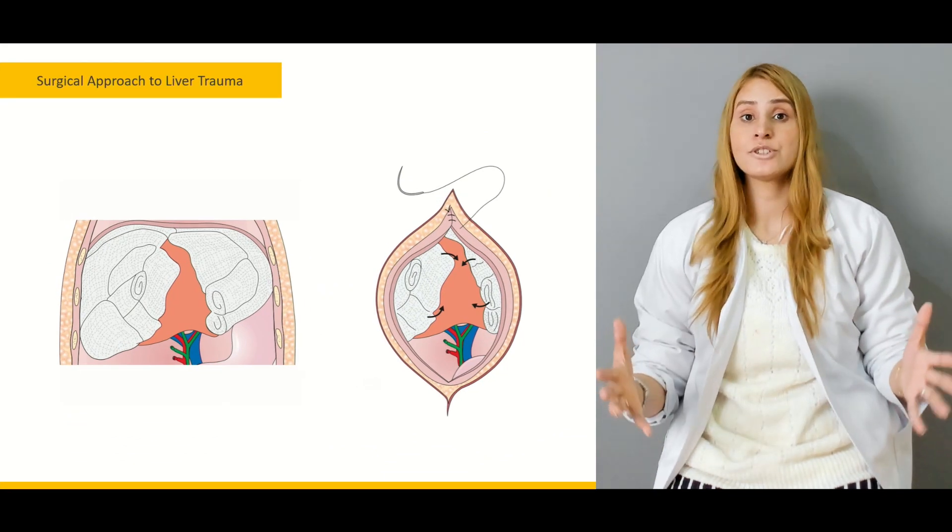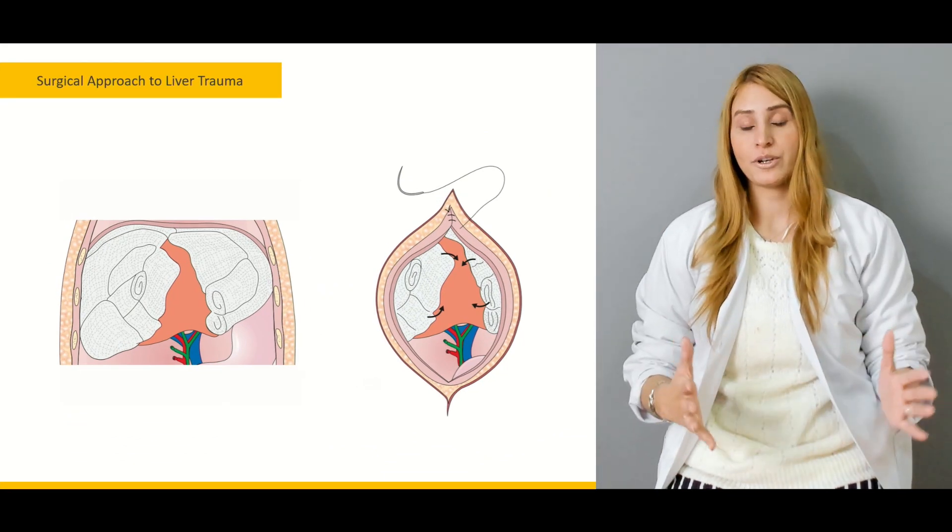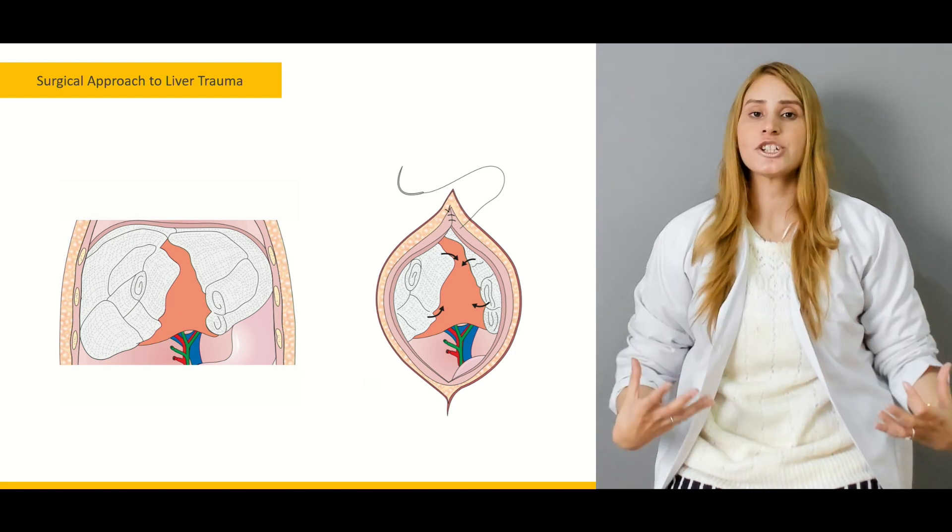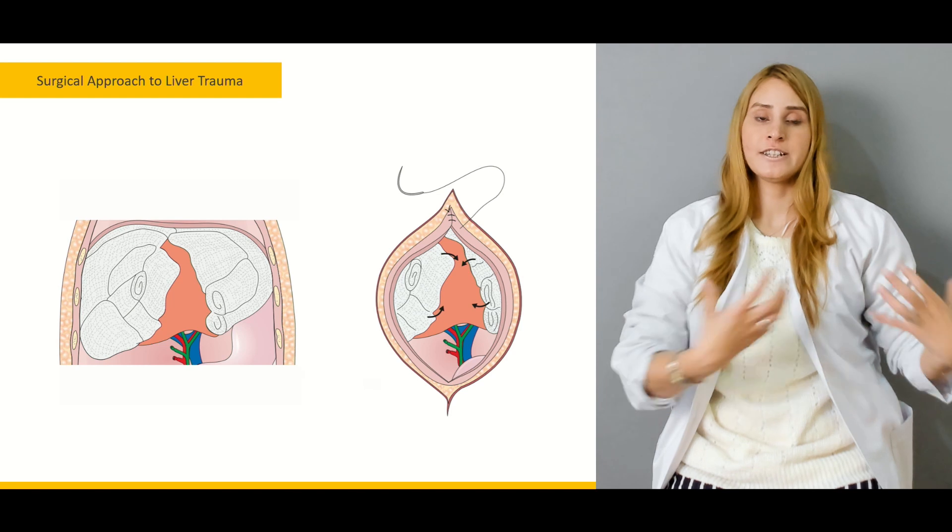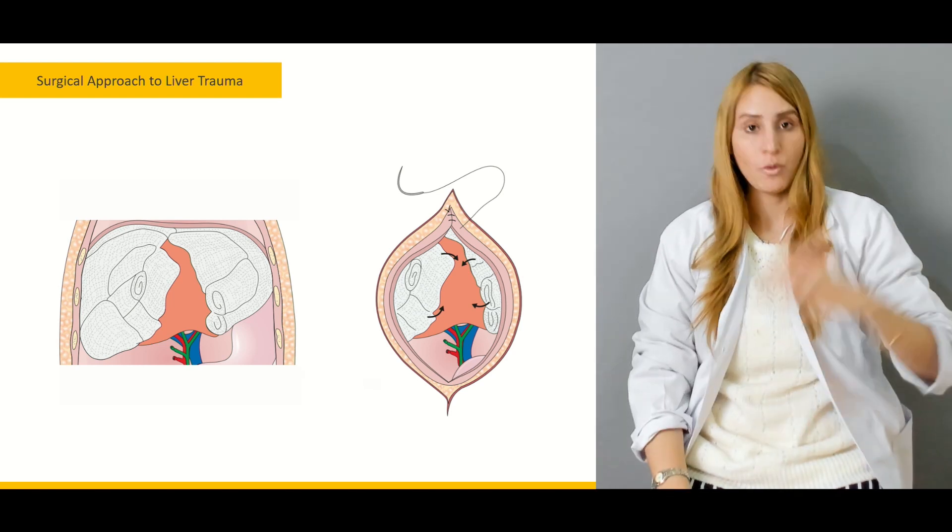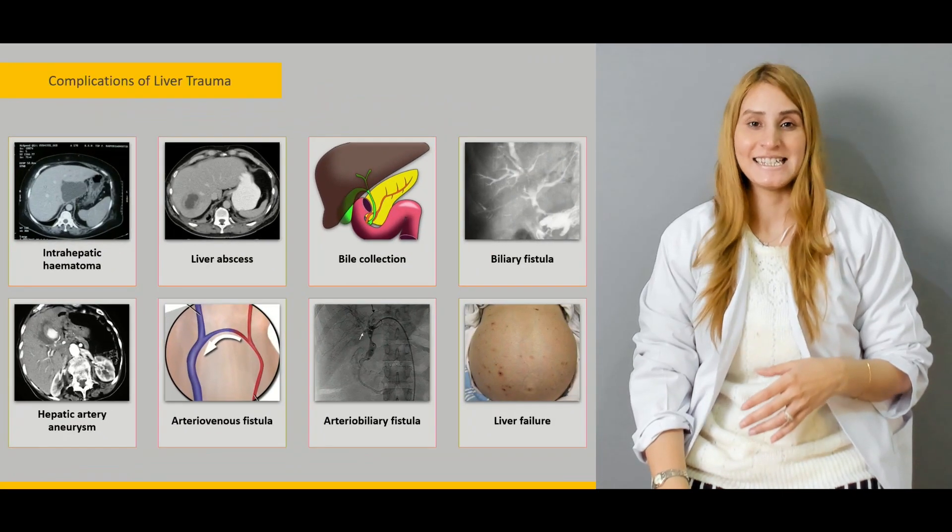Then the surgical approach is very important in today's lecture. We'll be talking about what kind of incision is sufficient for the exposure of the liver and spleen when assessing the injuries. A midline laparotomy or the rooftop incision - which one is better? We'll be talking in detail.